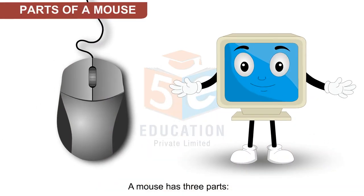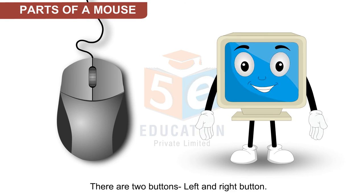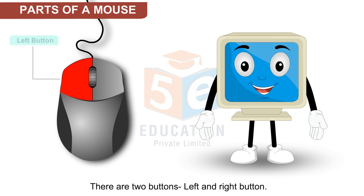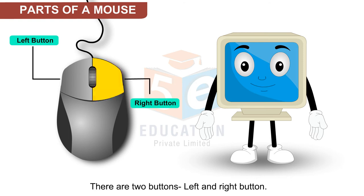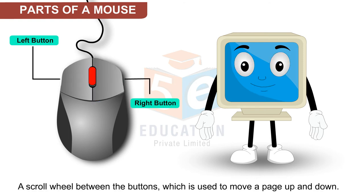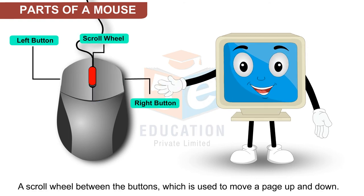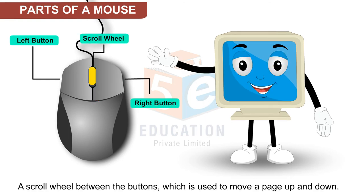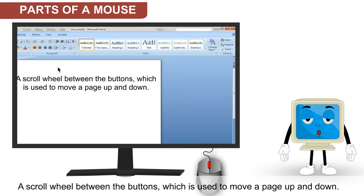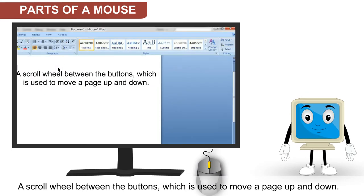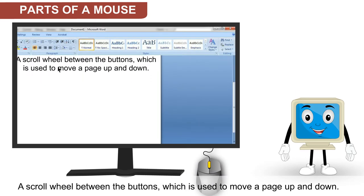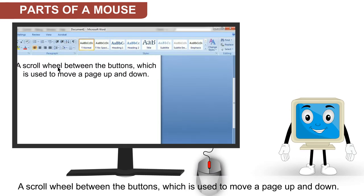A mouse has three parts. There are two buttons — left and right — and a scroll wheel between the buttons, which is used to move a page up and down.